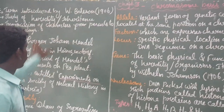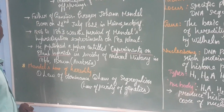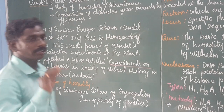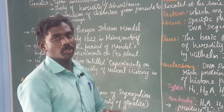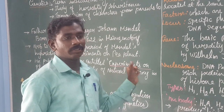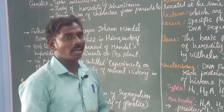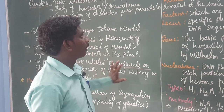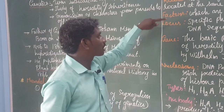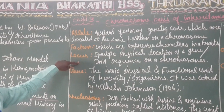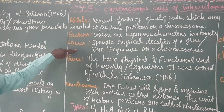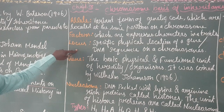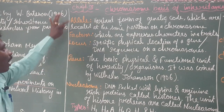This is Mendel's concept. He published in 1866, but his contribution was not recognized at the time because Darwin's Origin of Species was also published around the same time, and scientists concentrated on that. Mendel used the term 'allel factors' and 'locus' instead of today's terms like gene, chromosome, and DNA.